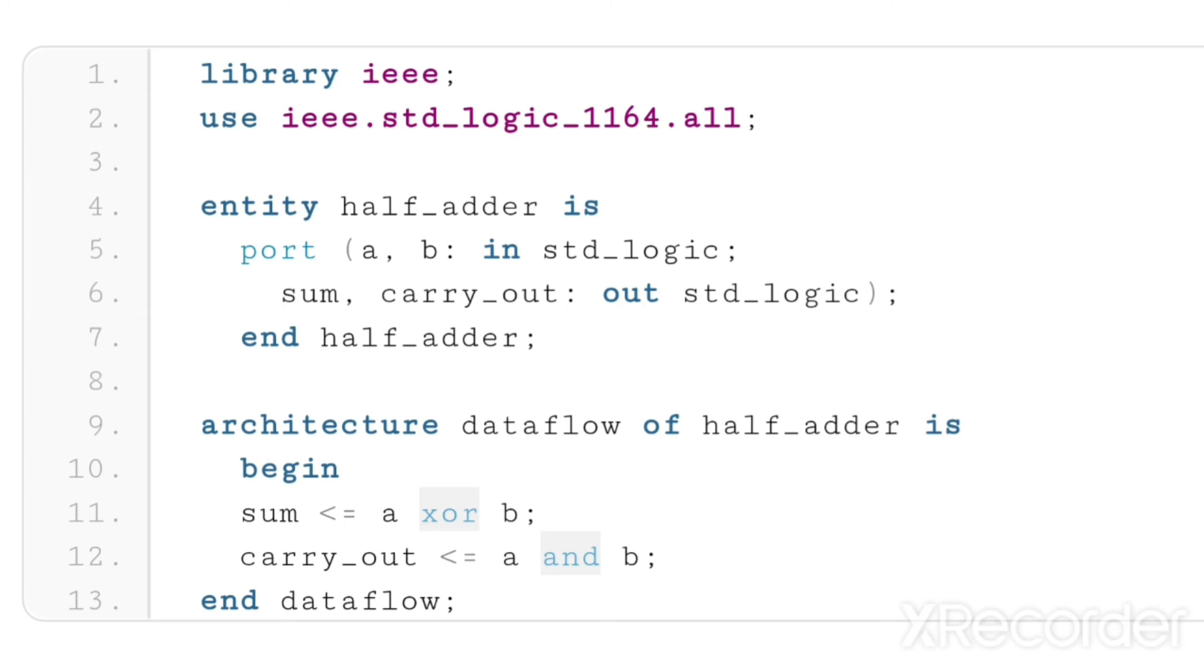If you have a question about library IEEE and use IEEE.std_logic_1164.all, the answer is: in the port declaration, if you're using std_logic as a data type for A, B, and out std_logic for sum and carry_out, to use that std_logic, we need to call the library IEEE.std_logic_1164. That line allows us to use std_logic while declaring the ports.